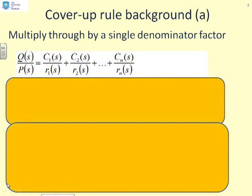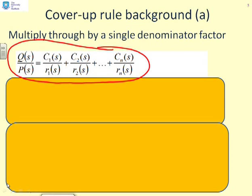So how do we use the cover-up rule to do this expansion? We've written down where we're trying to get to: we want to write Q over P equals C1 over R1 plus C2 over R2 and so on. Given we know R1, R2, all the way up to Rn, how do we find C1, C2, and so on up to Cn?